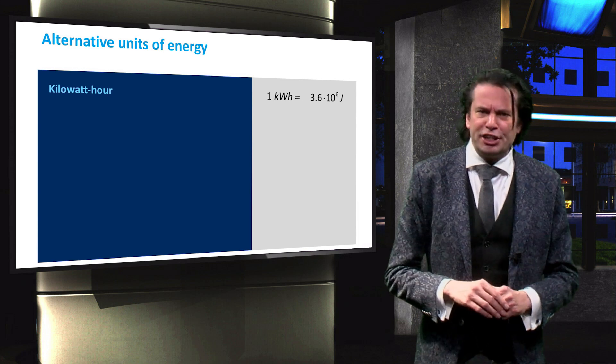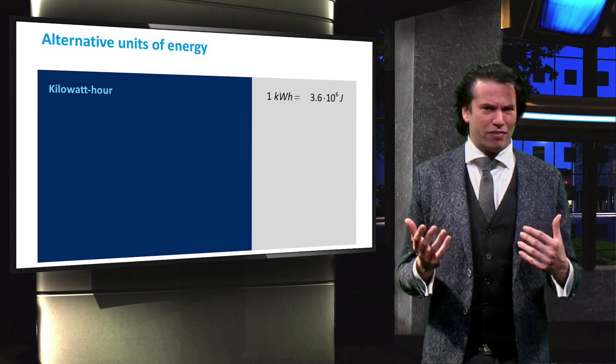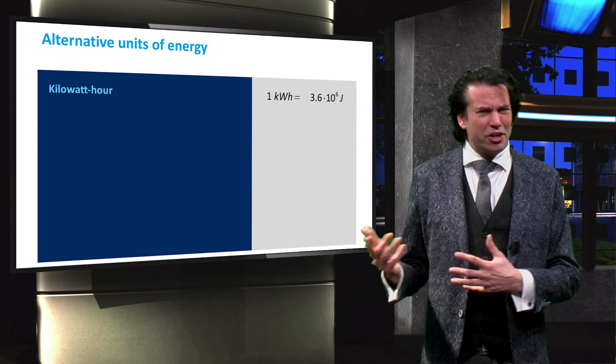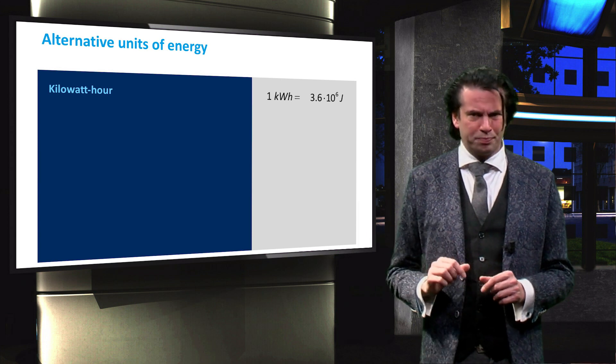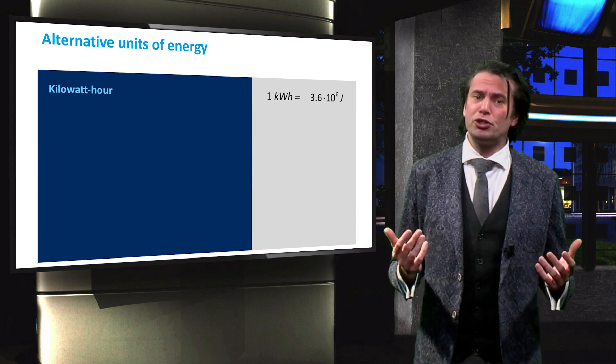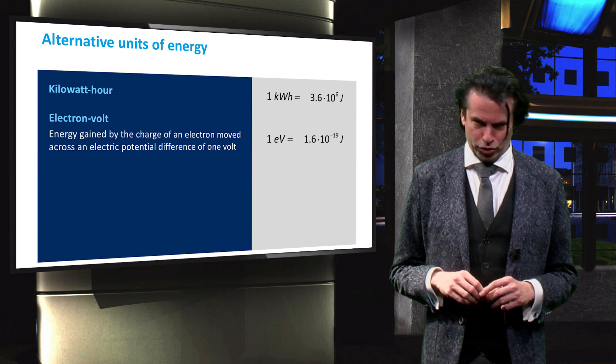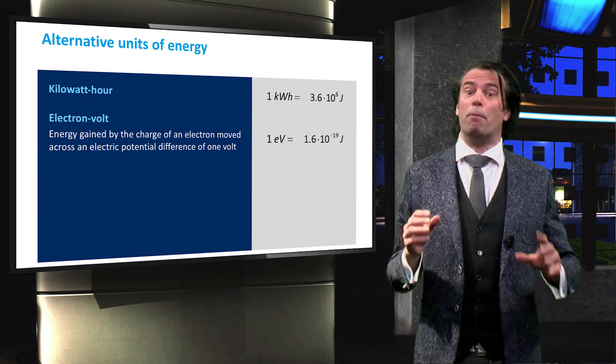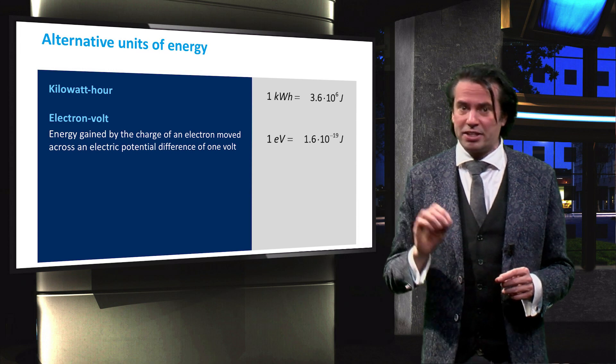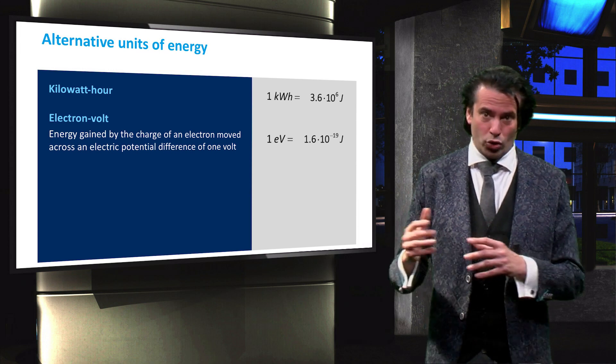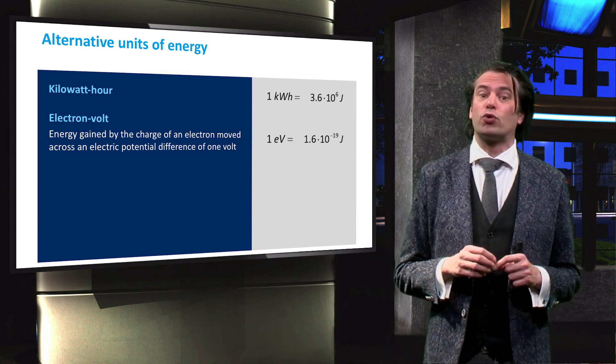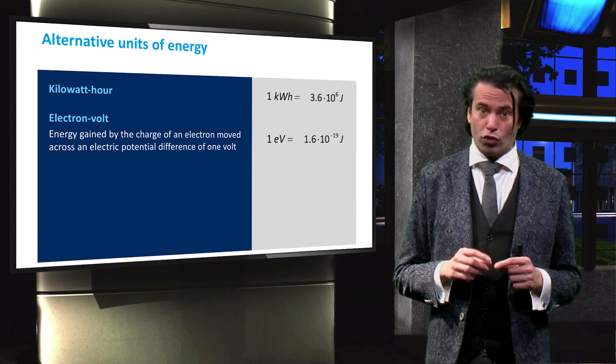The amounts of energy used in the atomic physics relevant for solar cells, on the other hand, are very small. We therefore use the unit electron volts. An electron volt is the amount of energy a body with a charge of one elementary charge gains or loses when it is moved across the electric potential difference of one volt.